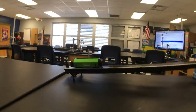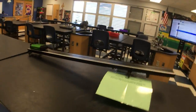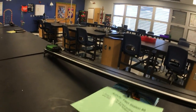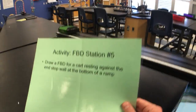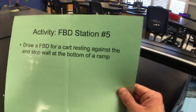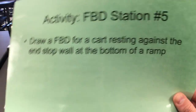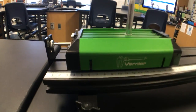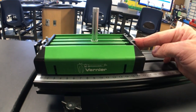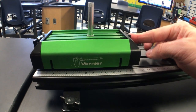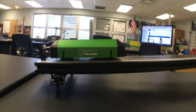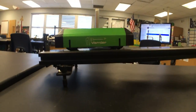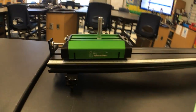Let's look at the last one. Last but not least, a cart on an angled ramp propped up on some awesome physics books. Station number five: draw a free body diagram for a cart resting against the end stop at the bottom of a ramp. Here it is resting — there's a little spring on there just for fun. What's the free body diagram for that?